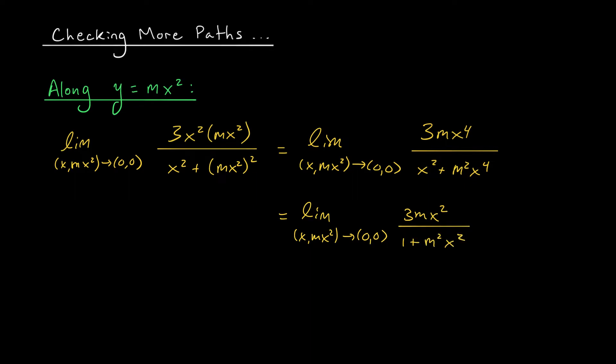Okay, we can actually evaluate this limit. The numerator is going to tend to 0 and the denominator is going to tend to 1. So we get 0 over 1. Ooh, the limit is 0 along every single one of these parabolas. So we're not just approaching 0 along lines through the origin, but also along parabolas through the origin that open in the y direction.